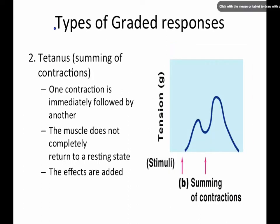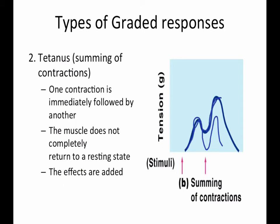The next type is tetanus. Tetanus is the summing of contractions — you have one contraction immediately followed by another. The muscle does not go back to the resting state before the next contraction occurs. Instead, it sums them — adding the results of each one on. The muscles do not completely return to a resting state, and the effects are added or summed together.